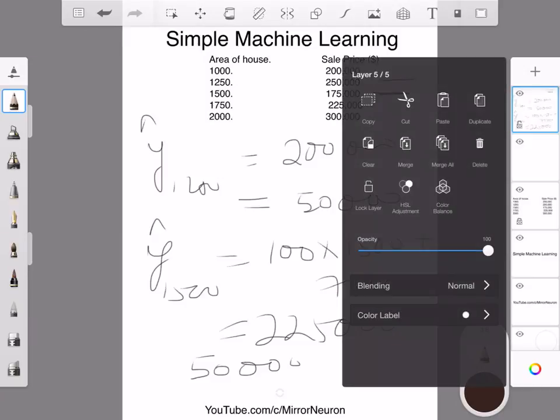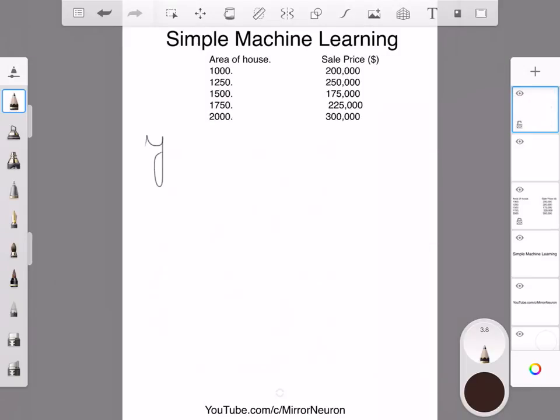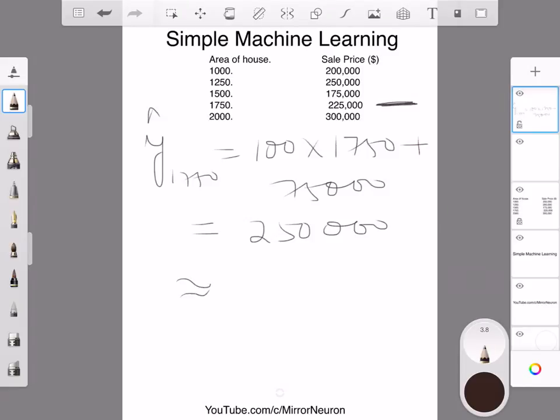And I keep doing this for all the records. If I now consider the 1,750 square feet area—why am I calculating all of this?—just to explain what goes on inside a machine learning algorithm. This comes around 250,000. If I compare it with my fourth value, there is an error of around 25,000.